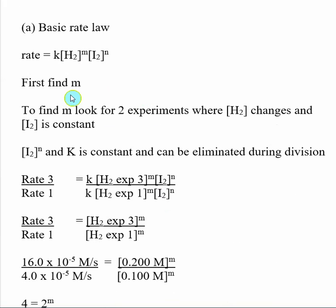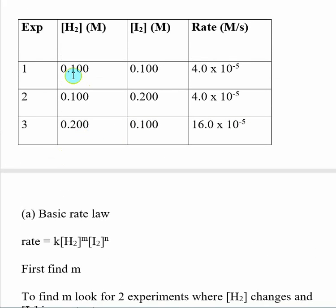To find M, which is related to hydrogen, look for two experiments where the concentration of H₂ changes but the concentration of iodine remains constant. In this case, those are experiments three and one. In experiment one, the initial concentration of hydrogen was 0.1; in experiment three it is 0.2. Importantly, the concentration of iodine remains the same — 0.1 in both experiments — and we have a corresponding experimentally measured rate for each.